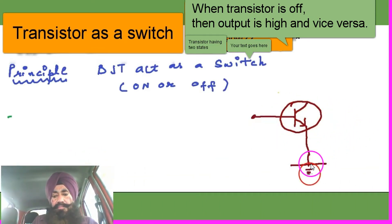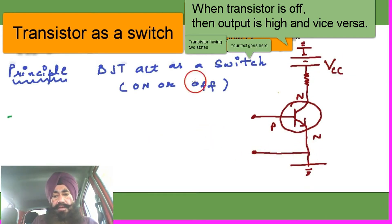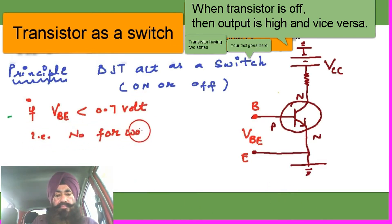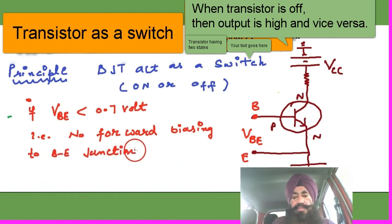This is the emitter — the emitter is grounded. The collector is given a positive supply VCC and then grounded. The voltage between base and emitter: if it is less than 0.7V, there is no forward bias and the transistor is off.